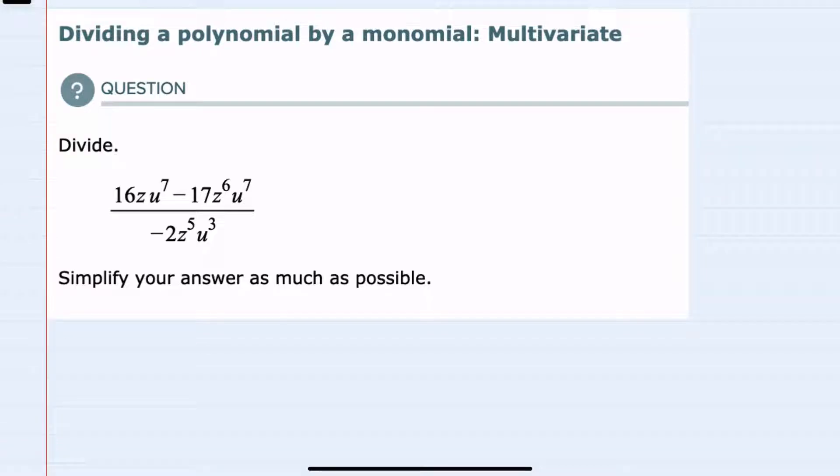In this video, I'll be helping you with the Alex problem type called dividing a polynomial by a monomial multivariate. In this example that we're simplifying, we can see that we have two terms in the numerator and a single term in the denominator.